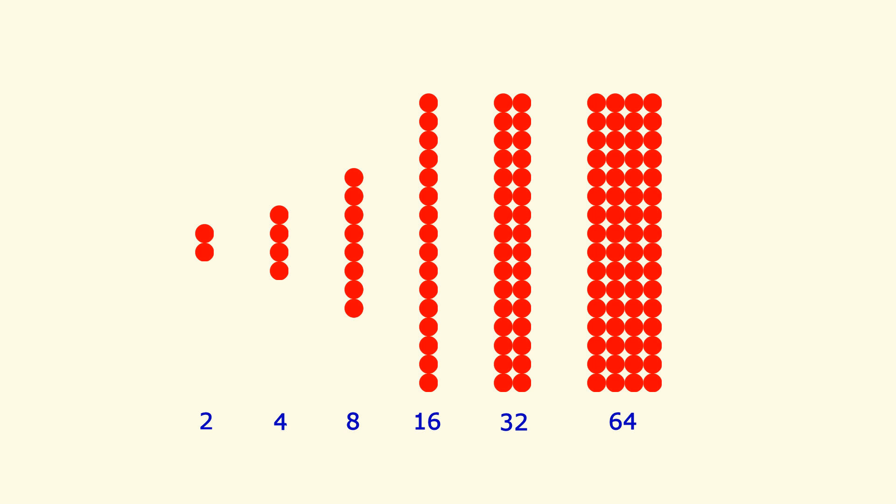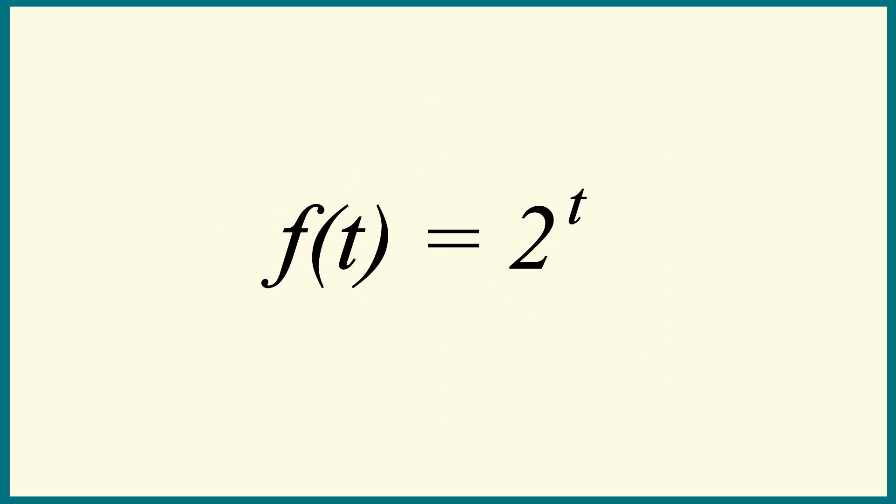The continuous function that describes this situation is f of t equals 2 to the t. It looks like this.